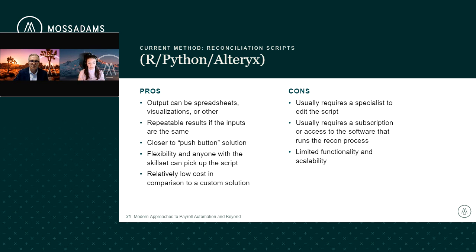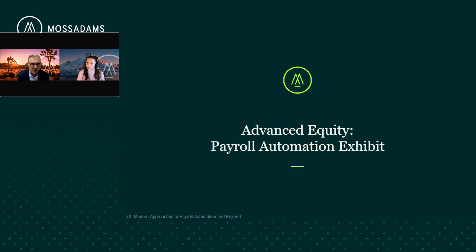Pros of a script: you can have outputs that are spreadsheets or visualizations. You get repeatable results if the inputs are the same, and it's closer to a push-button solution — for example, that script ran in about 45 seconds processing 20,000 rows. There's flexibility for anyone with the skill set and a relatively low cost compared to a custom solution. The cons: you typically need a specialist who can edit the script and who understands both the business and technical aspects. There may be a subscription cost — Alteryx, for example, has a cost. And there might be limited functionality and scalability depending on the specialist's experience. Many companies today are being asked to automate, and scripting is a great solution for that mandate.